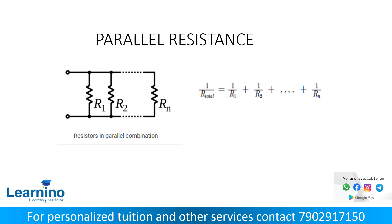So what is the overall resistance in a parallel connection? 1 by R equivalent is equal to 1 by R1 plus 1 by R2 plus 1 by R3, up to 1 by Rn.